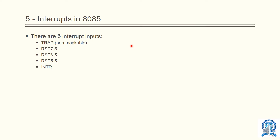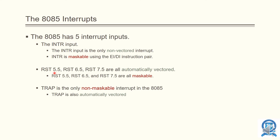The 8085 has five hardware interrupts: TRAP, RST 7.5, RST 6.5, RST 5.5, and INTR. INTR is the only non-vectored interrupt and it is maskable — it can be delayed. RST 5.5, RST 6.5, and RST 7.5 are automatically vectored and are all maskable. TRAP is the non-maskable interrupt and is also automatically vectored.